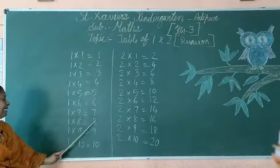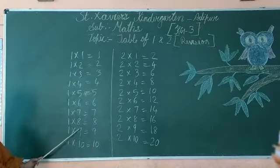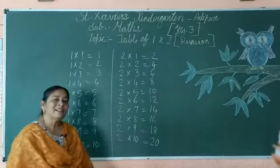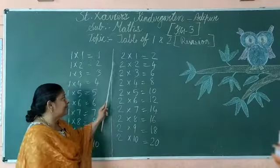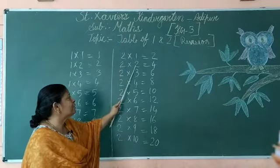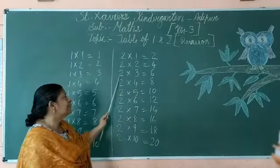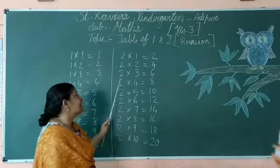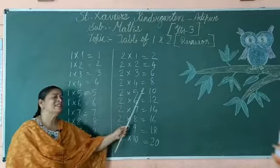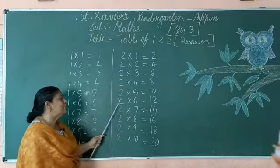Now table of two. Two one's a two, two two's a four, two three's a six, two four's an eight, two five's a ten, two six's a twelve.